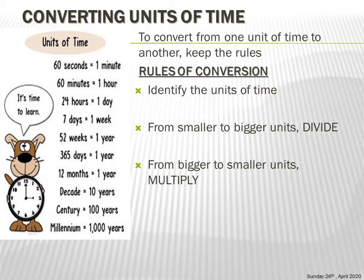The first rule is: identify the units of time in the question. The second rule is: when converting from a smaller unit to a bigger unit, you divide. When converting from a bigger unit to a smaller unit, you multiply.